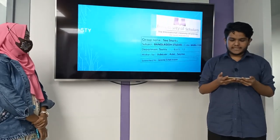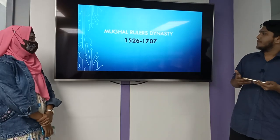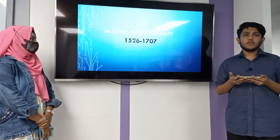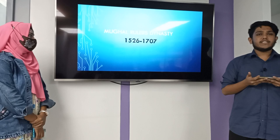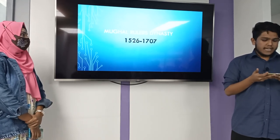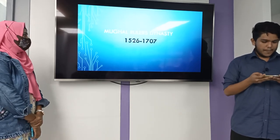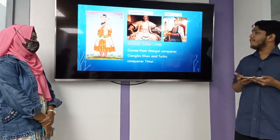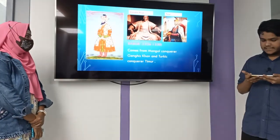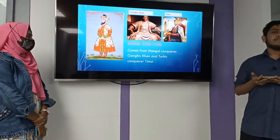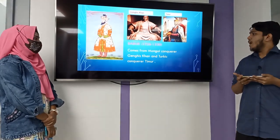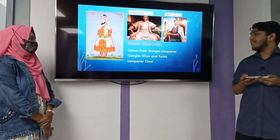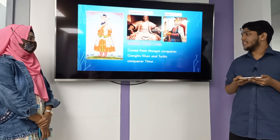So now I am presenting my presentation. The Mughal Ruler Dynasty was started in the year 1526 and it ended in 1707. Zahir ud-Din Muhammad Babur was the founder of the Mughal Ruler Dynasty. From his father's side he came from the Mongols, and from his mother's side he was from Genghis Khan.